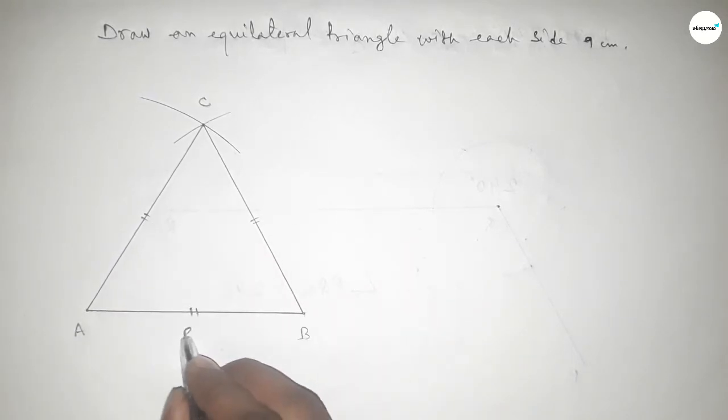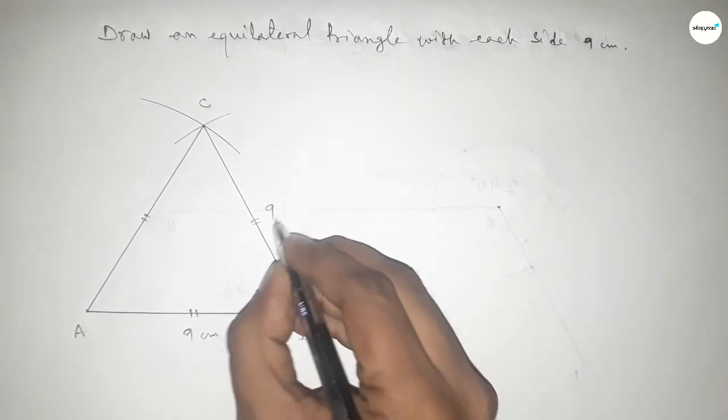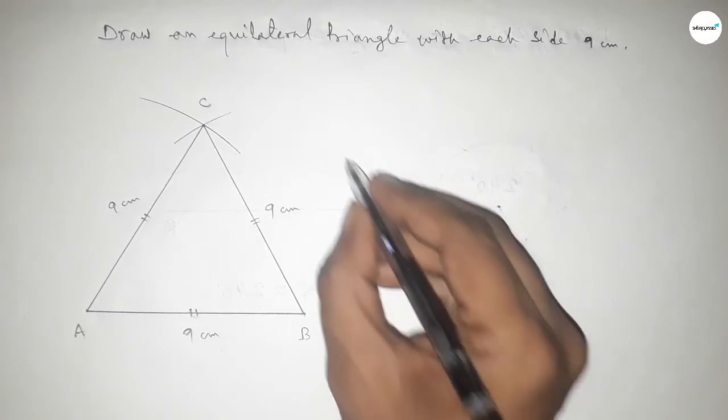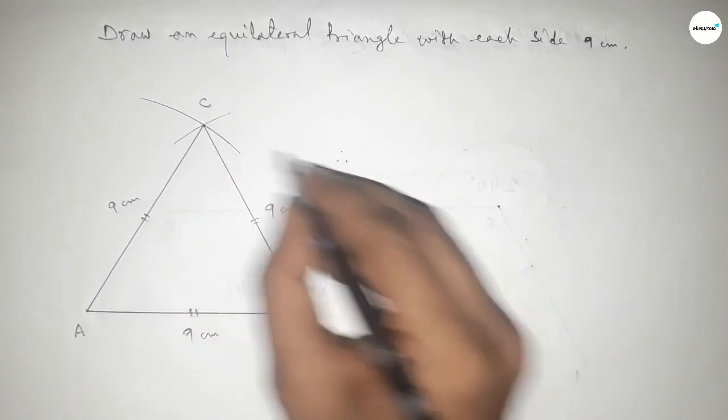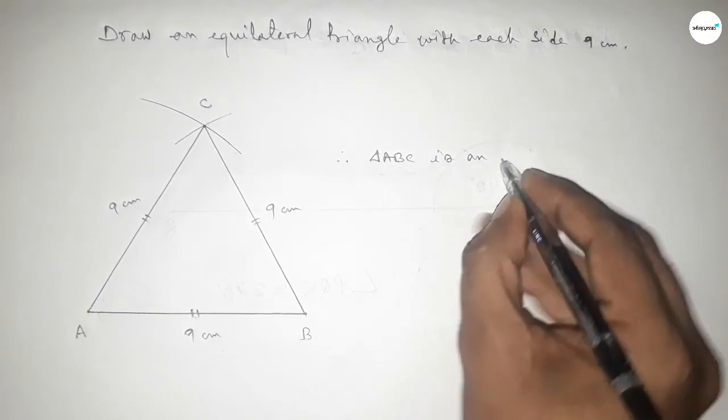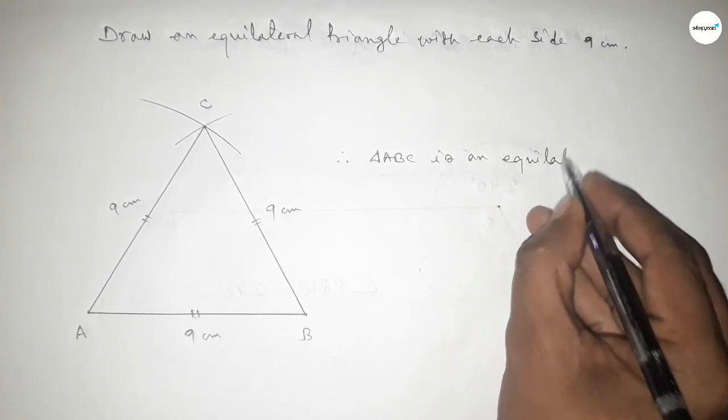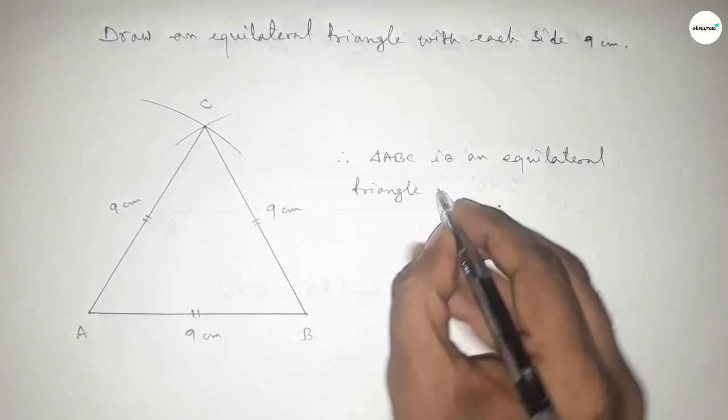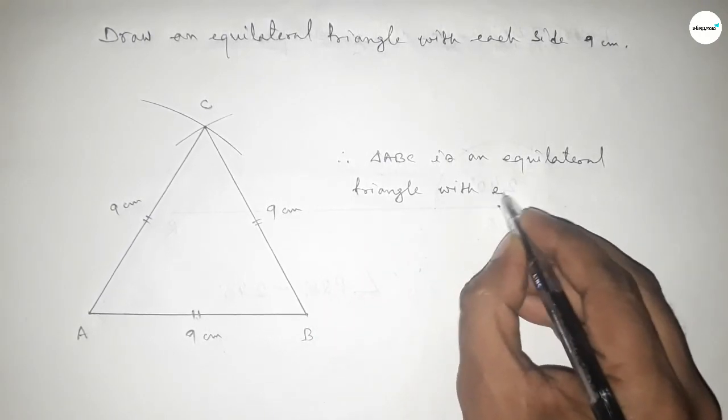So this is 9 centimeters, this is 9 centimeters, and this side is also 9 centimeters. Therefore, triangle ABC is an equilateral triangle with each side 9 centimeters. This is the process to construct an equilateral triangle with each side 9 centimeters.